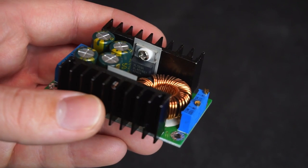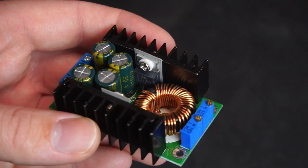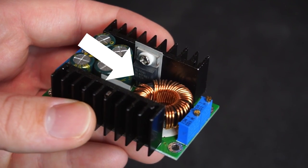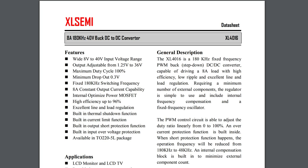To answer that we can look up the datasheet for the buck IC, which in my case is an XL4016. The datasheet tells us that this buck IC uses a fixed 180kHz switching frequency and utilizes PWM to regulate the output voltage.